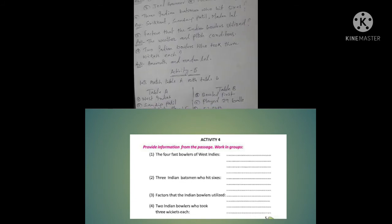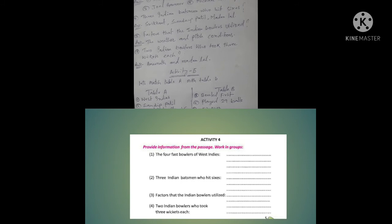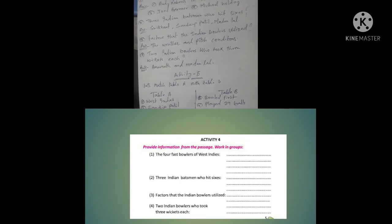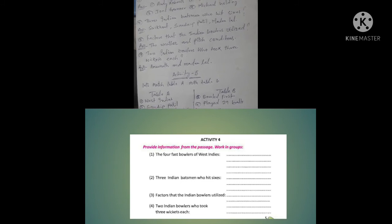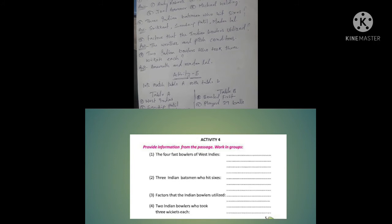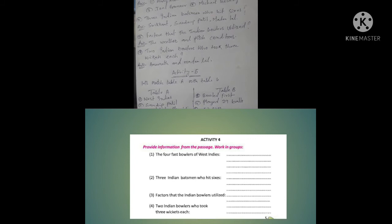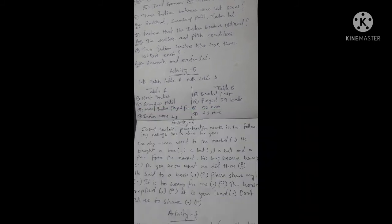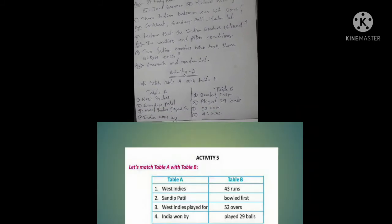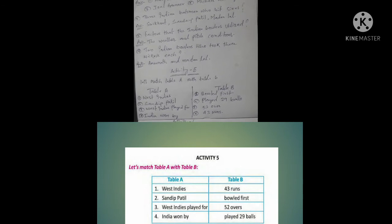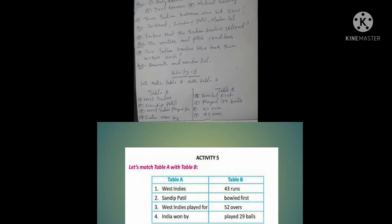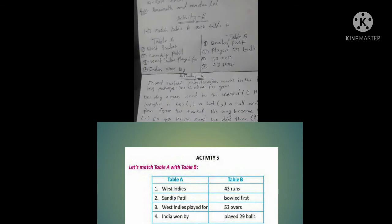Activity 5: Let's match Table A with Table B. Table A number 1: West Indies bowler fast. Number 2: Sandip Patil played 29 balls. Number 3: West Indies played 52 overs. Number 4: India won by 43 runs.